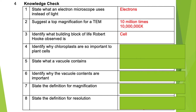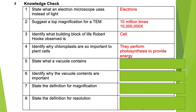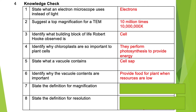Number four asks why chloroplasts are important to plant cells. Chloroplasts are the green parts, what makes plants green, and they're related to photosynthesis, which allows plants to absorb energy. Number five asks what a vacuole contains — the vacuole or permanent vacuole contains cell sap. Number six asks why the vacuole contents are important. The vacuole contains cell sap, which is a nutrition storage for the plant. When resources are low, the plant absorbs energy stored inside its vacuoles.